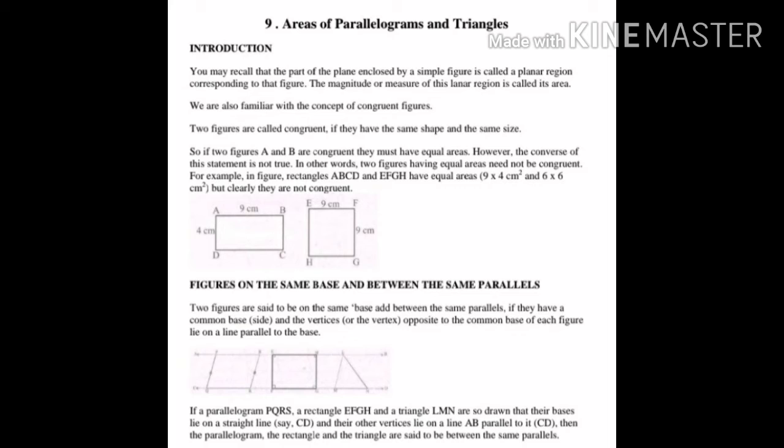Then the parallelogram, the rectangle, and the triangle are said to be between the same parallels. اس کا مطلب ہے کہ parallelogram PQRS، rectangle EFGH اور triangle LMN تینوں same base CD پر لائے کر رہے ہیں اور ان تینوں کے vertices line AB پر ہیں۔ AB اور CD ایک دوسرے کے parallel ہیں، اس لیے یہ تینوں same parallels AB اور CD کے بیچ میں ہیں۔